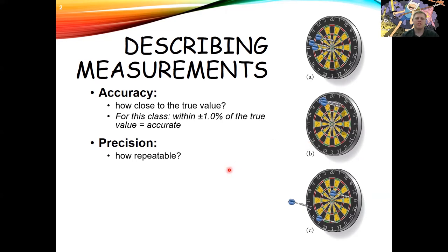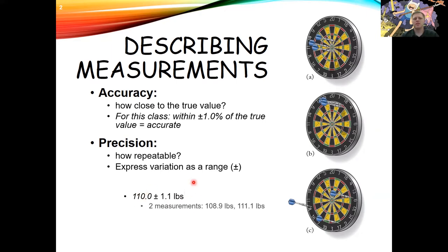We express precision as a range — for example, 110 plus or minus 1.1 pounds. If you take two measurements and the first is 108.9 pounds and the second is 111.1 pounds, the average is 110 and the range is 1.1. The difference between 111.1 and 108.9 is 2.2, so 1.1 is the range on either direction of the average.